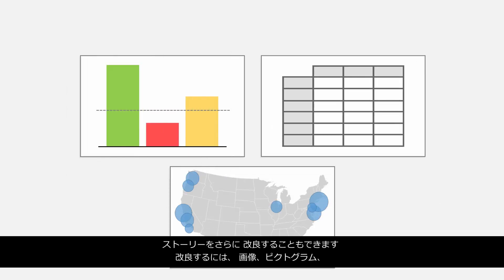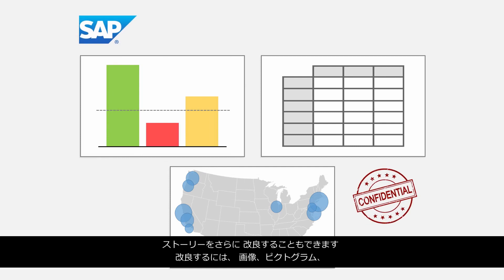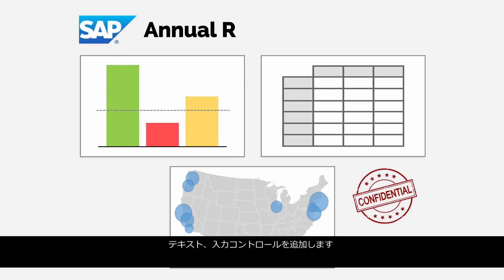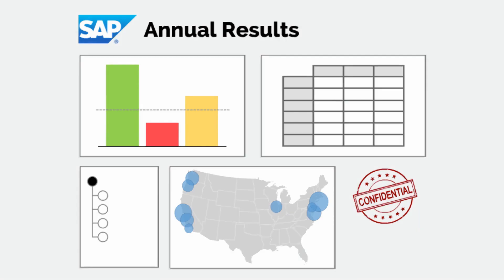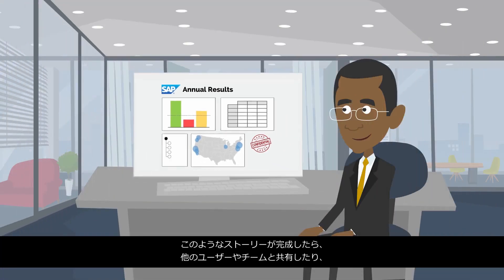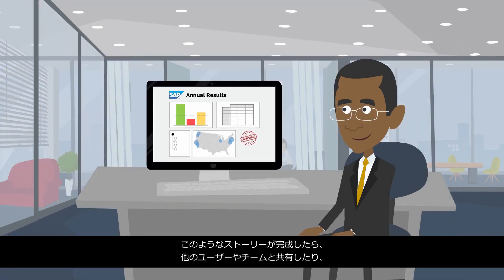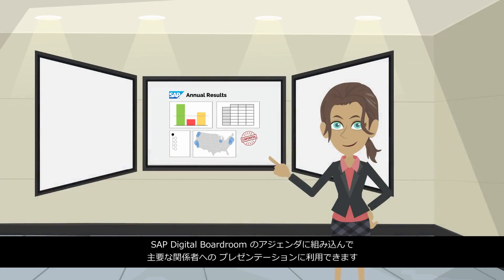You can further refine your stories by adding images and pictograms, text, and input controls. Once complete, these stories can be shared with other users or teams, or compiled into an SAP Digital Boardroom agenda for presentation to major stakeholders.